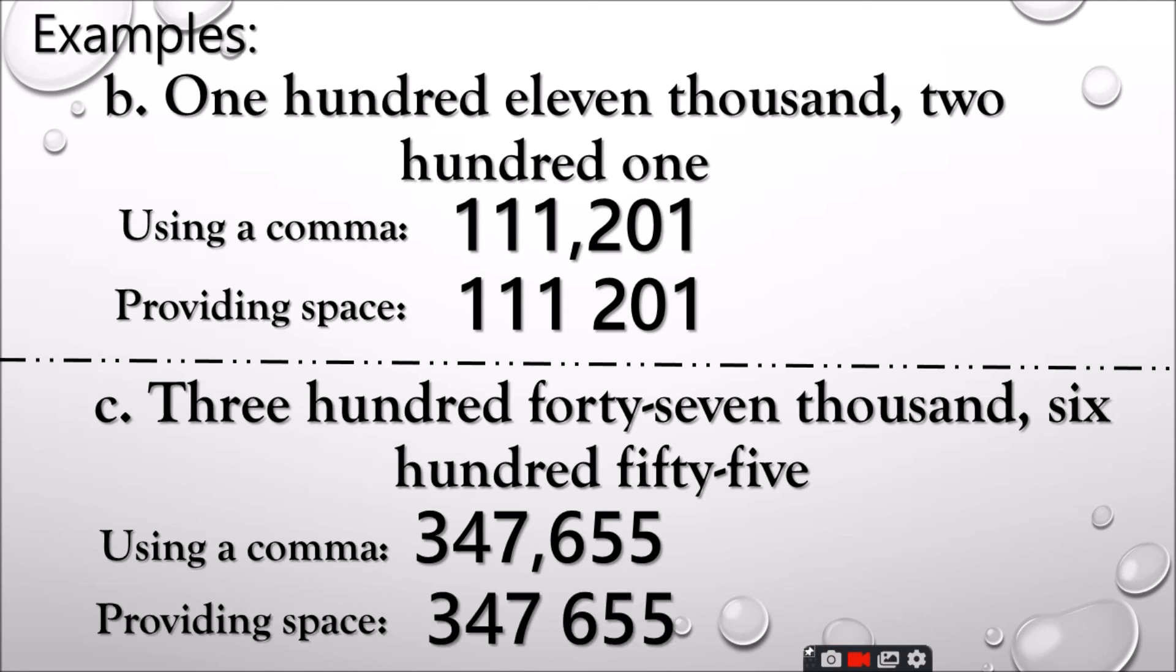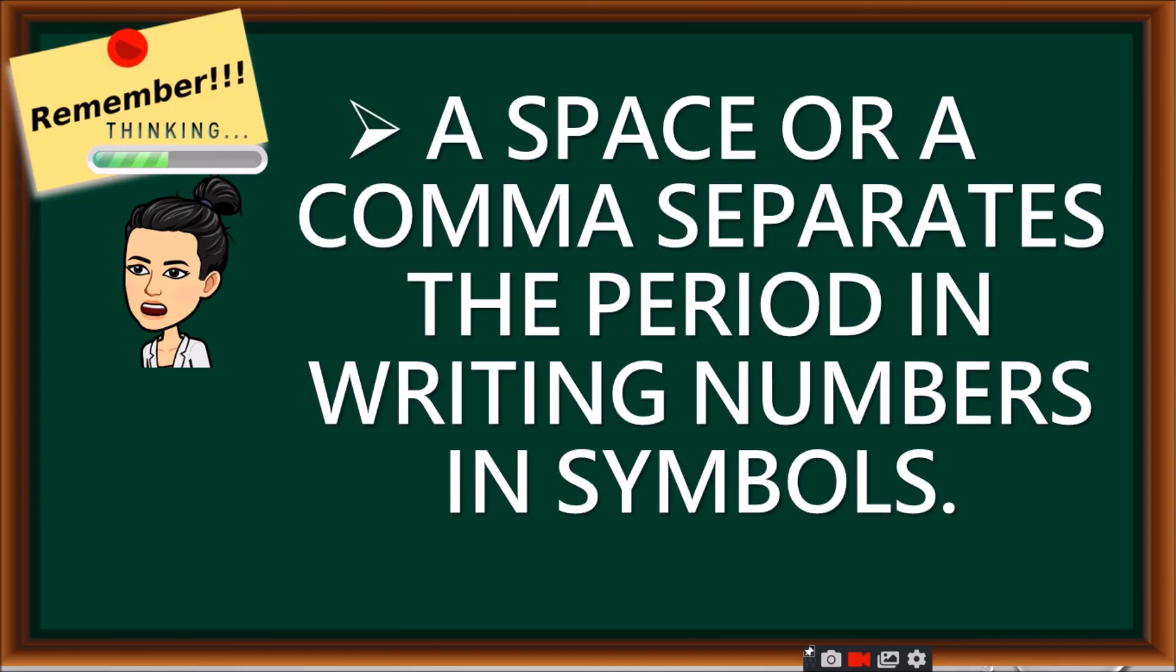Providing a space, 347,000, a space, and 655. So always remember, a space or a comma separates the period in writing numbers in symbols.